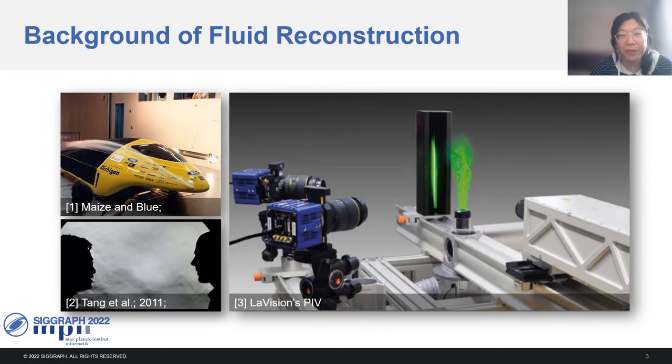The PIV, Particle Image Velocimetry method, is one of the most established methods in industry. In this method, we inject special particles into the target flow, light them up using some laser, and check them with special cameras. Due to these special setups, we cannot easily apply them to measure arbitrary fluid motion in our daily life.